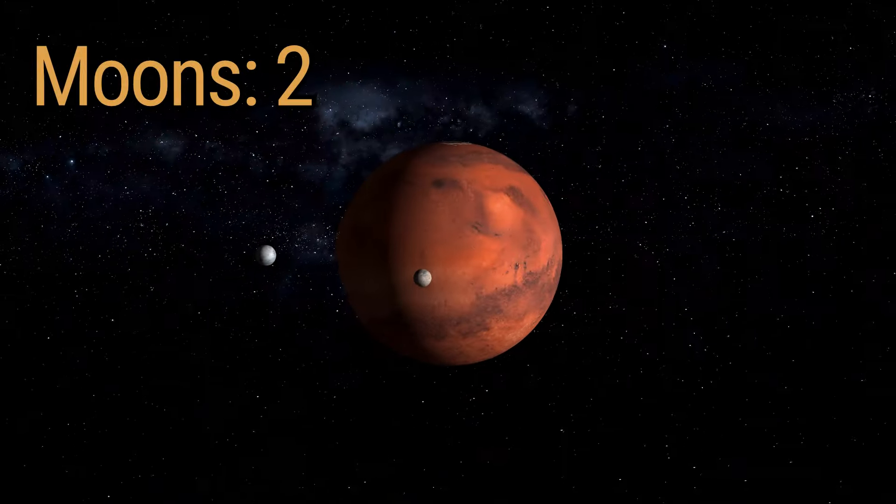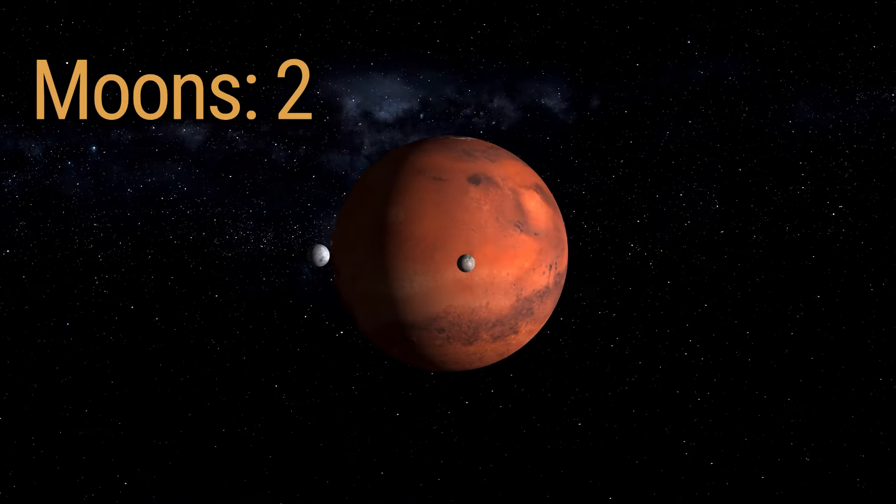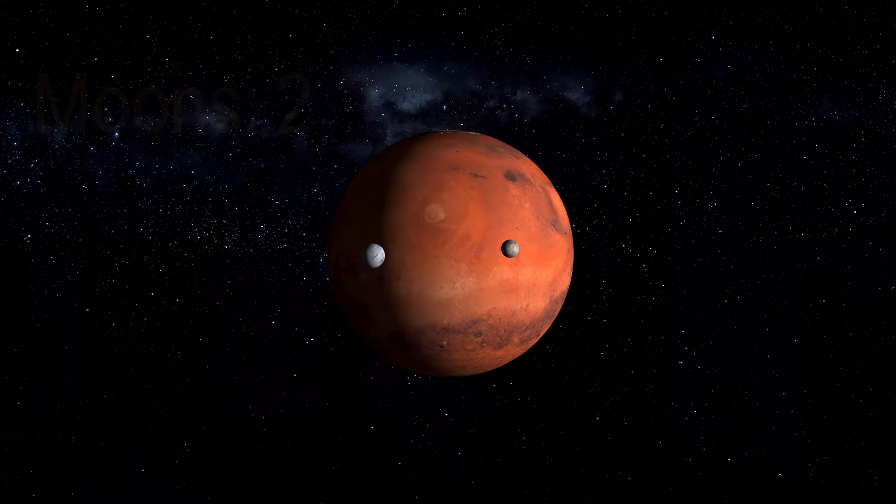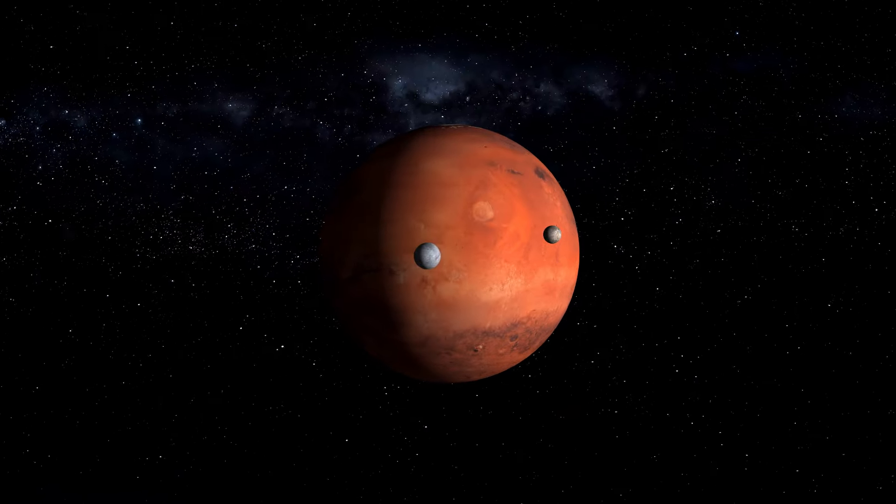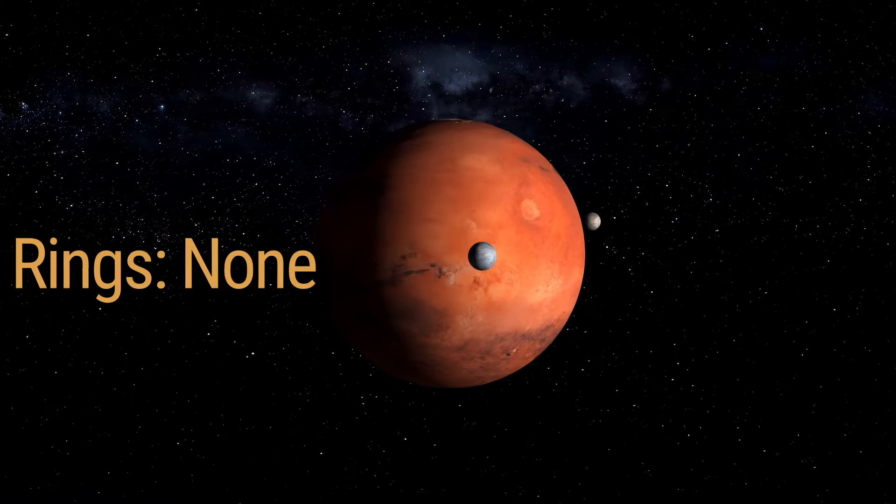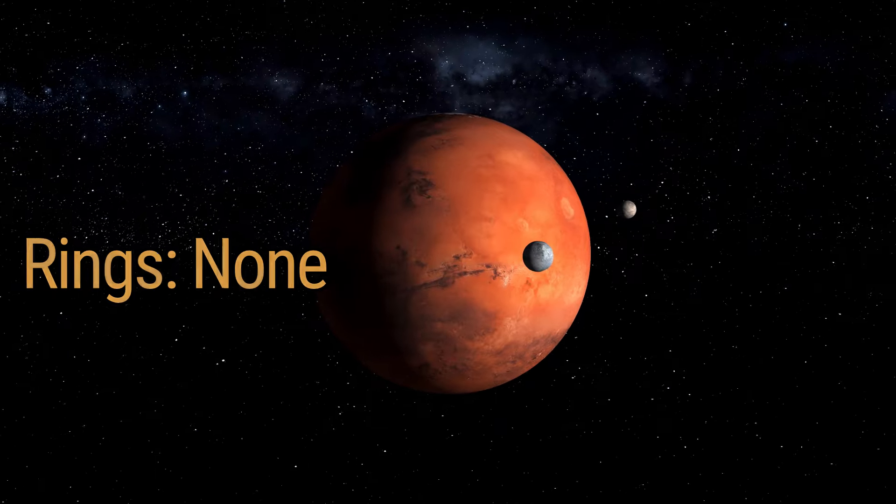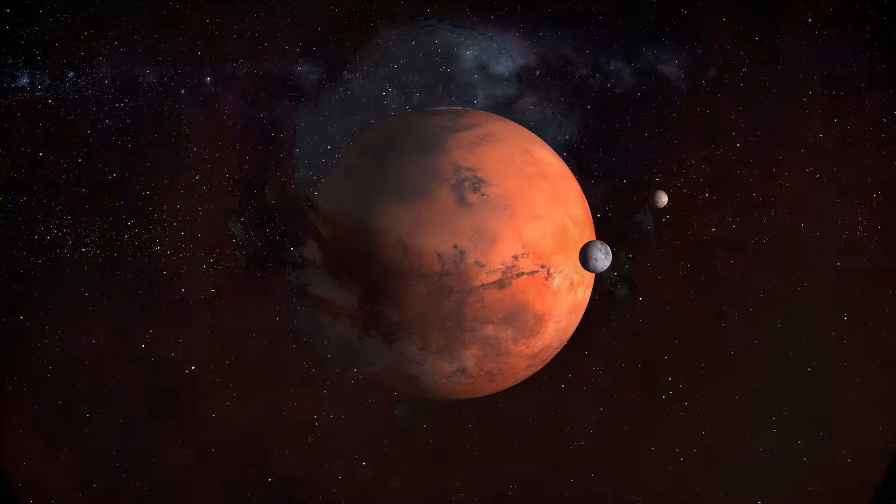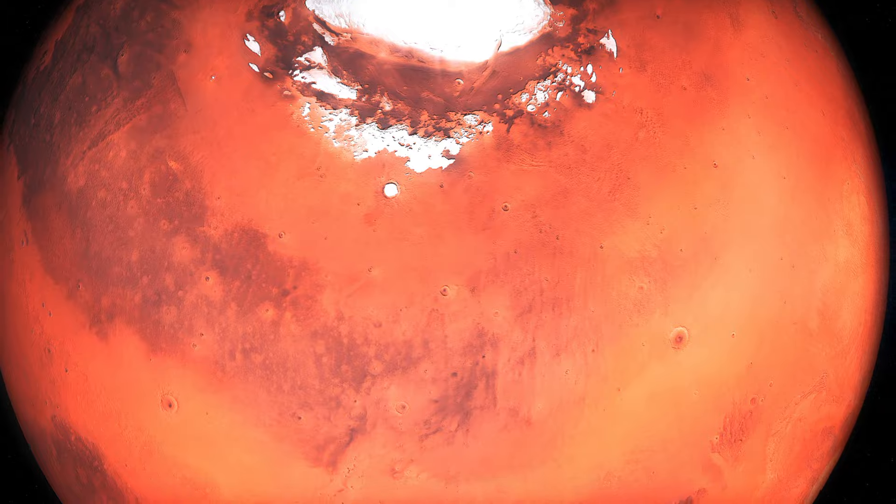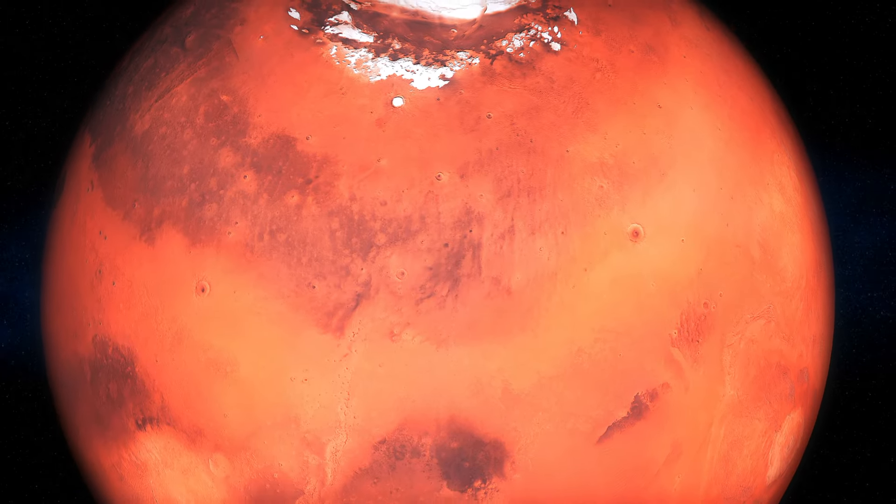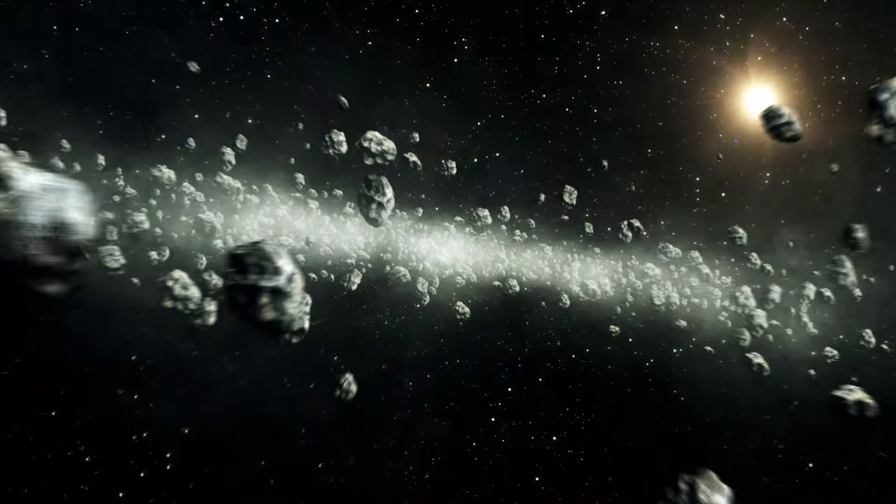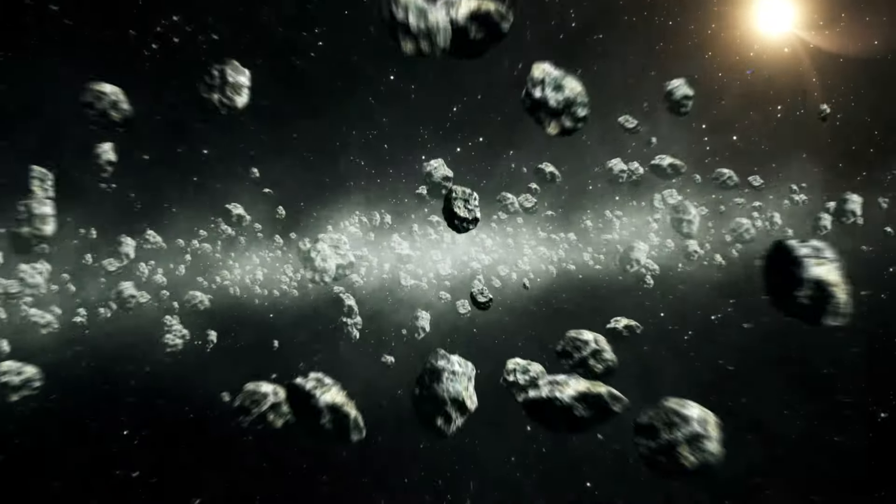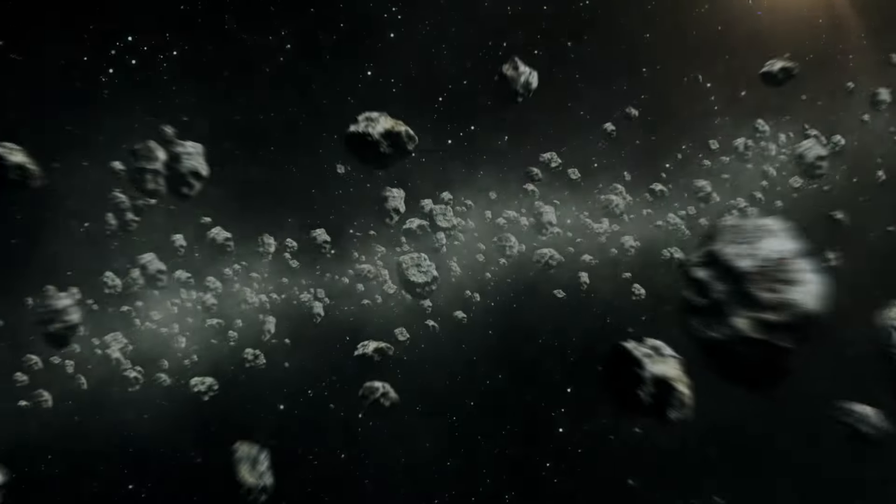Mars boasts two small moons, Phobos and Deimos, remnants of the solar system's chaotic past. No rings encircle Mars, but its moons whisper tales of a dynamic history. As we leave Mars behind, we venture beyond the asteroid belt to the outer realms of our solar system, where the gas and ice giants reside.